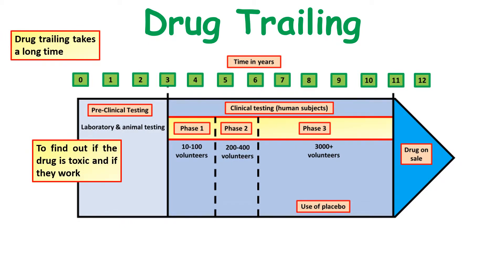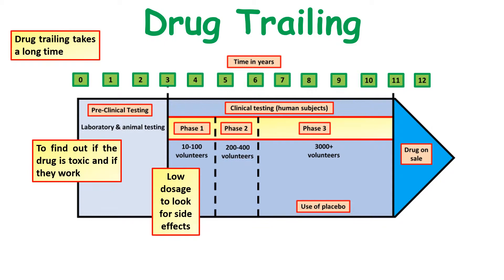We start off with preclinical testing, which is to find out if the drug is toxic and if they work. Drugs that pass that then go into phase one testing, which uses somewhere between 10 and 100 volunteers. We use low dosages and look for side effects. After that we move on to phase two testing, where we use about 200 to 400 volunteers, and we use this to work out what dosage of the drug needs to be given to a person.